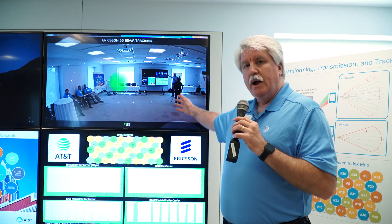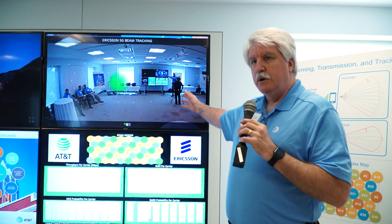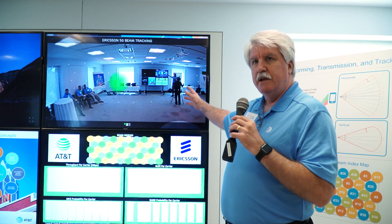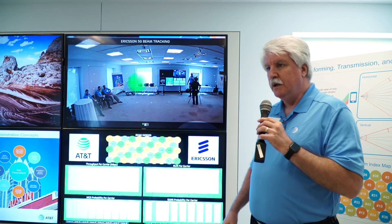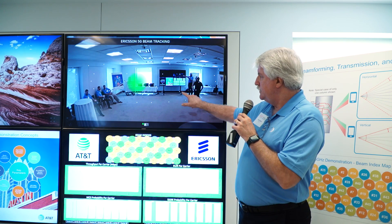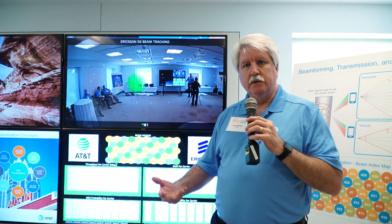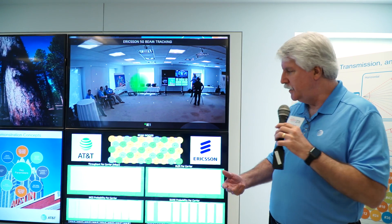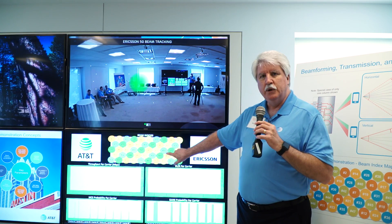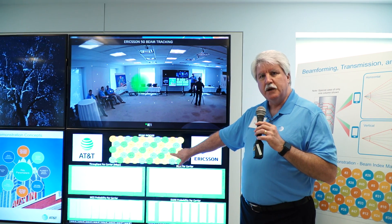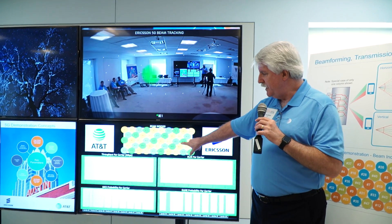In the upper right, what we're showing is a view from the base station of the room and of the user equipment. Each one of these white dots is illustrative of where the beams might point if they were being formed on a particular beam according to this diagram here.